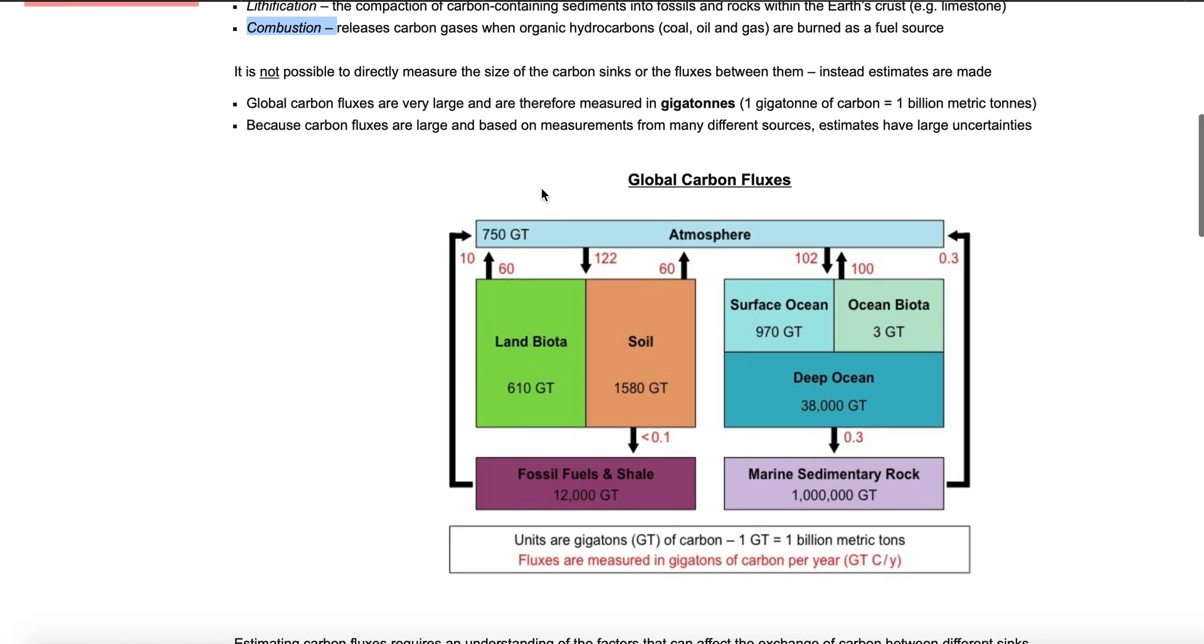Last thing I want to just walk through is this visual for carbon flux between the different reservoirs. First up here on the top, where my cursor is, is the atmospheric reservoir of carbon, mostly carbon dioxide, but some methane dissolved into the gases in and around us.